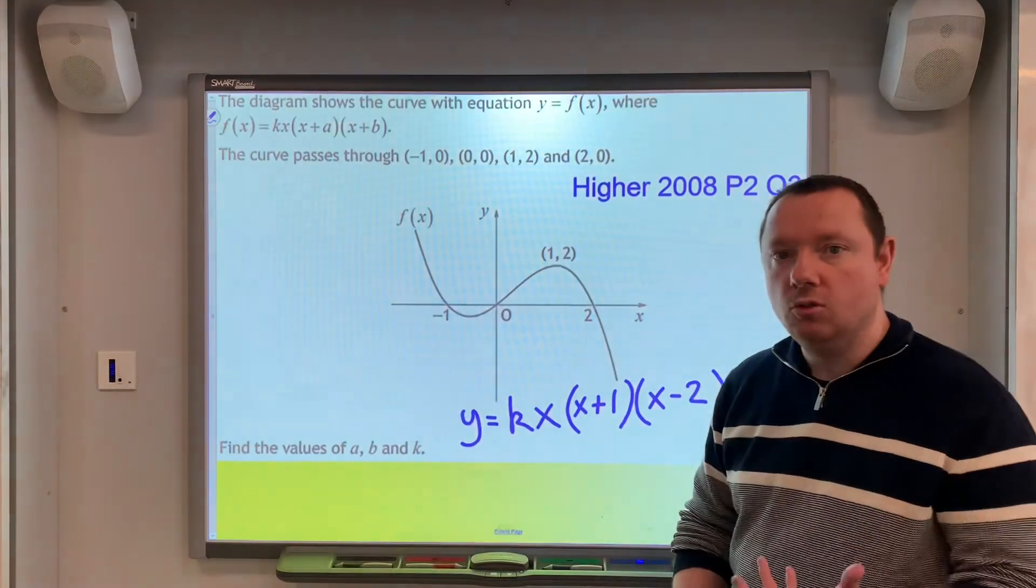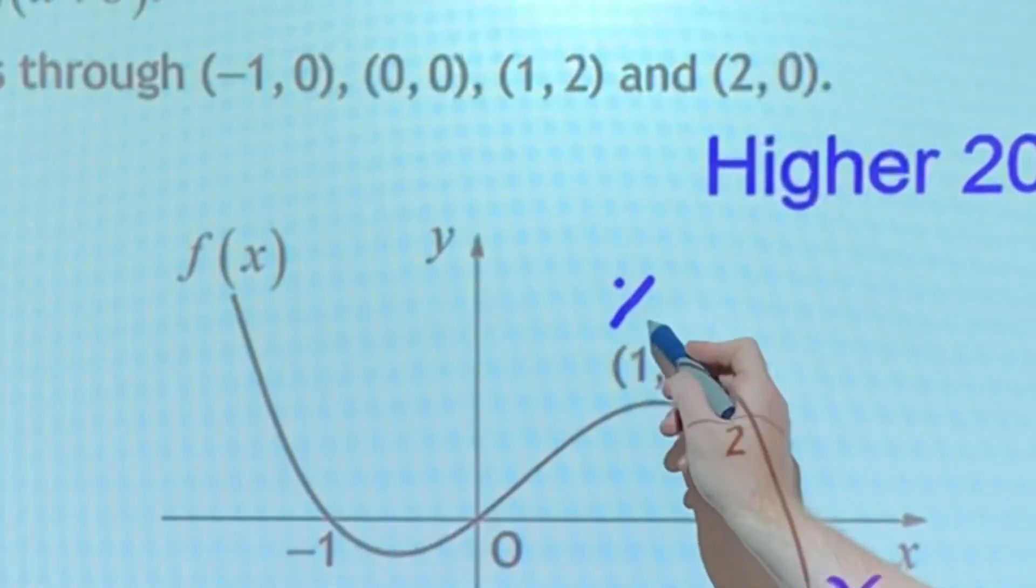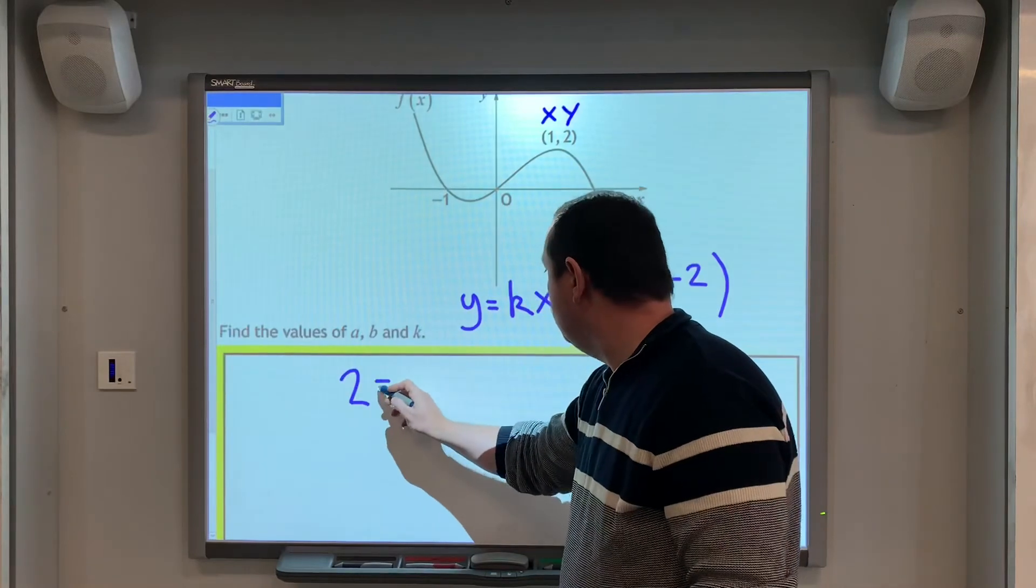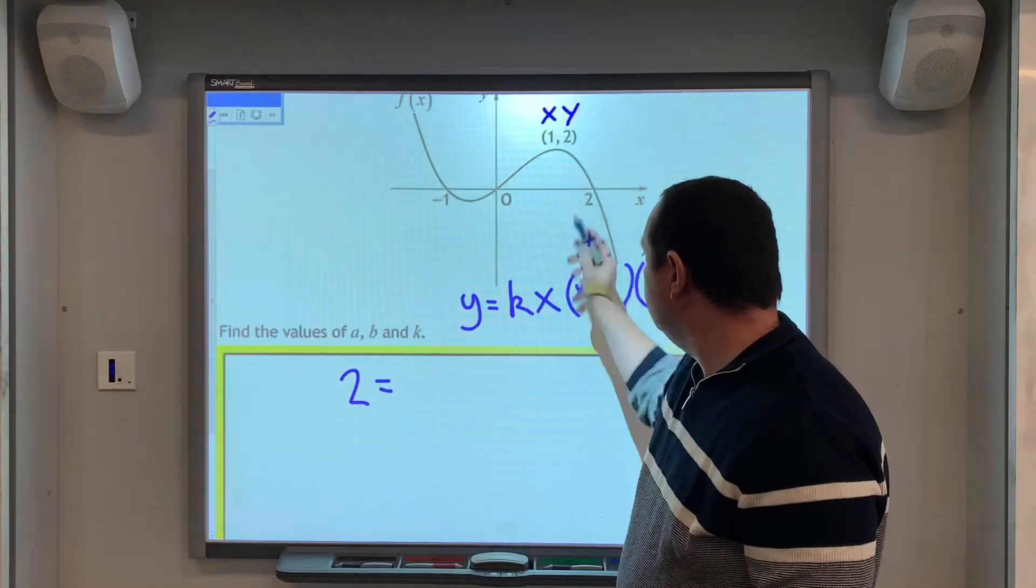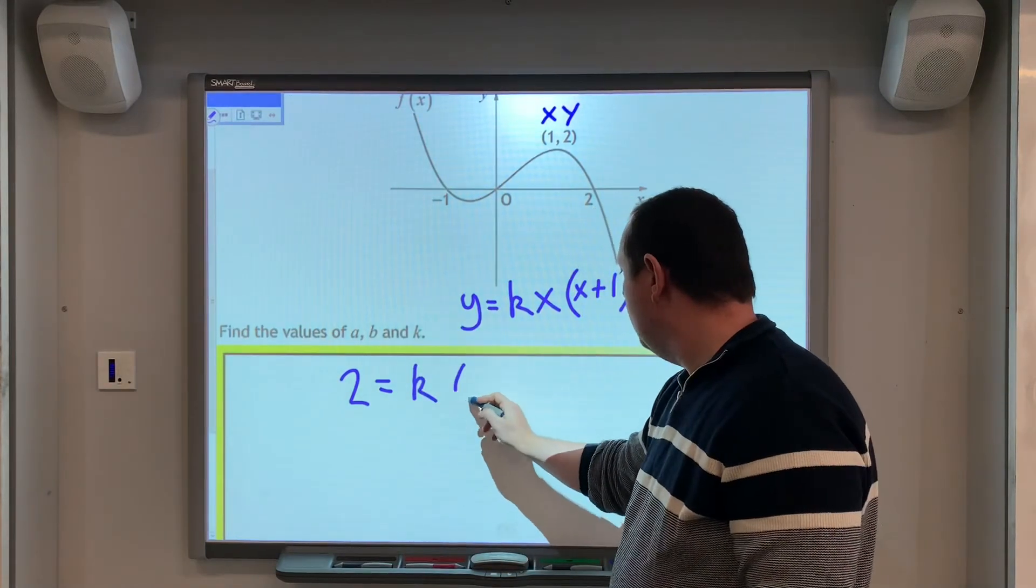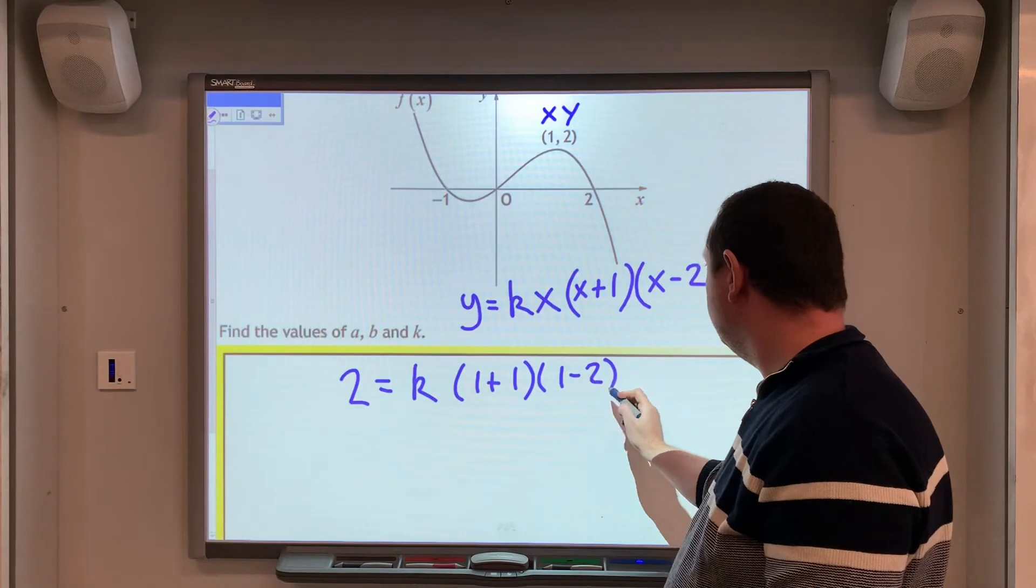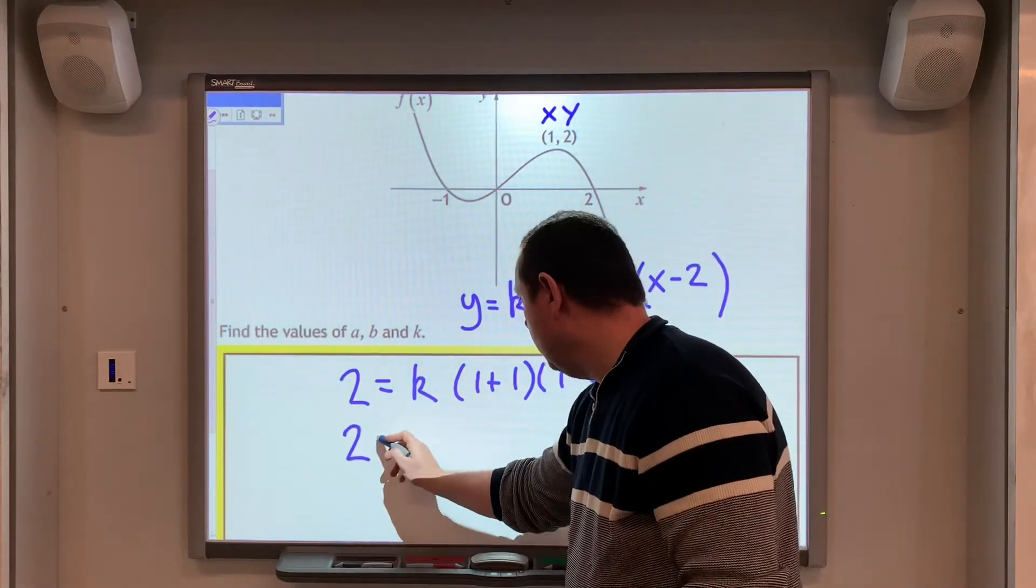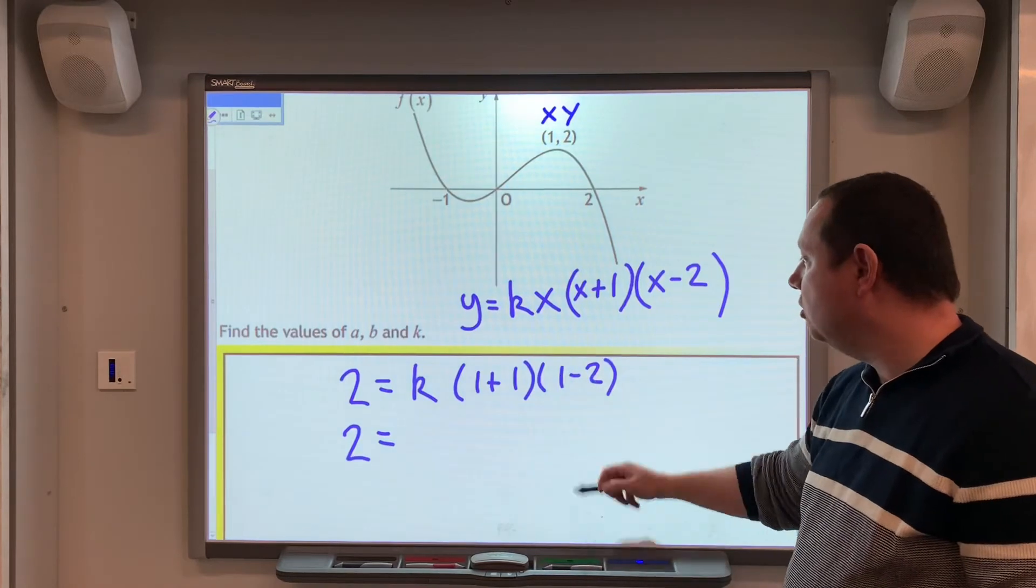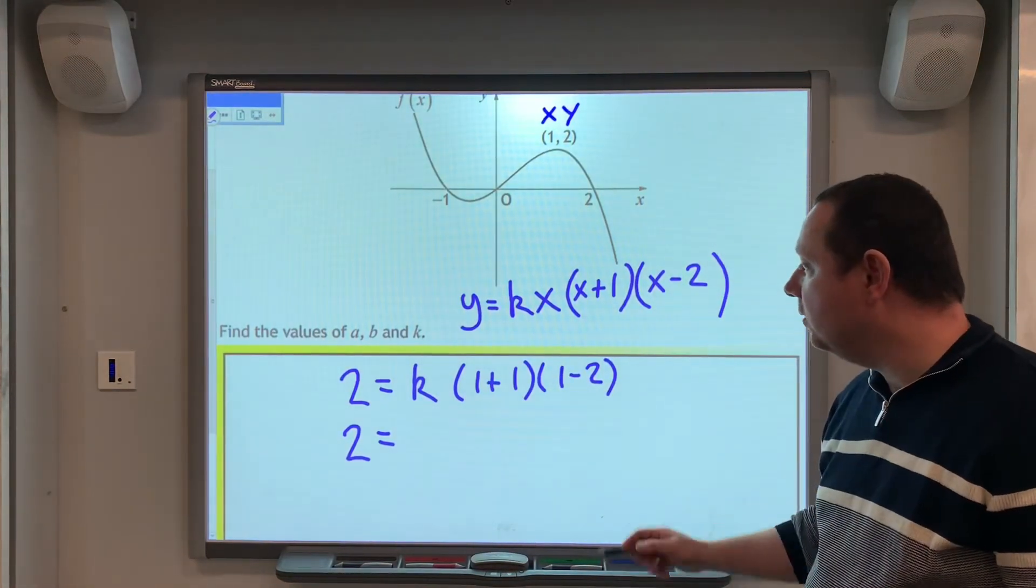We're almost done, we just don't know what k is, but we're given this point here. So, there's my x and y values to substitute in. So, y is 2, so we've got 2 equals, x is 1, so 1 times k, which is k, 1 plus 1, 1 minus 2. 2 equals, 1 plus 1 is 2, 1 minus 2 is minus 1, 2 times minus 1 is minus 2, minus 2k.